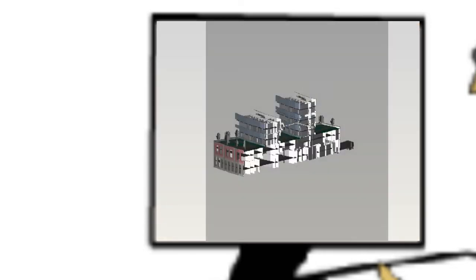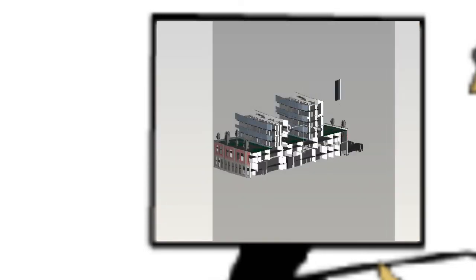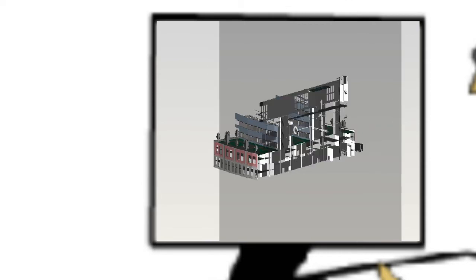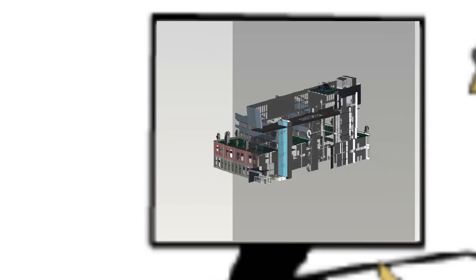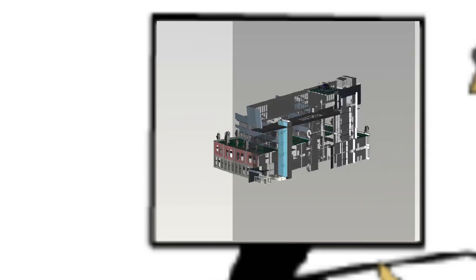BIM 360 Glue also makes it simple to section a design. Section views can cut along the X, Y, or Z axis. Here we see how you can have precise control over the location of each section.